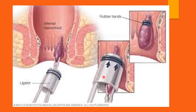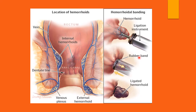This is the rubber band ligation equipment. The second-degree hemorrhoids are pulled into the ligator device, which carries the rubber bands. Once the hemorrhoid is pulled into the ligator, the rubber bands are released, strangling the neck of the hemorrhoid and causing ischemic necrosis and fibrosis, leading to the hemorrhoid dropping off. A clearer picture shows internal hemorrhoids pulled into the ligator, with rubber bands fired to catch the neck of the second-degree hemorrhoid, causing it to become strangulated and fall off.